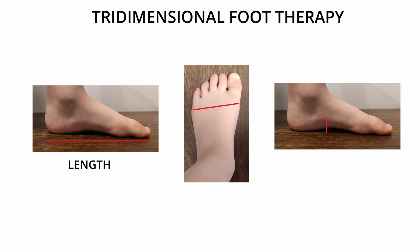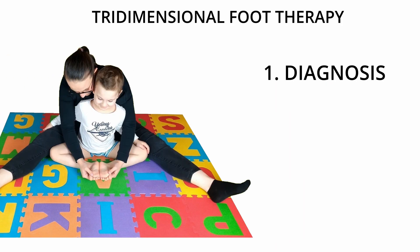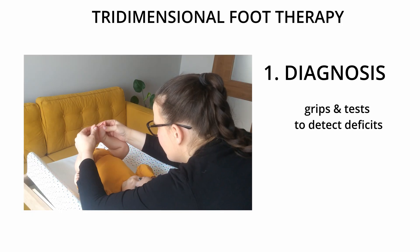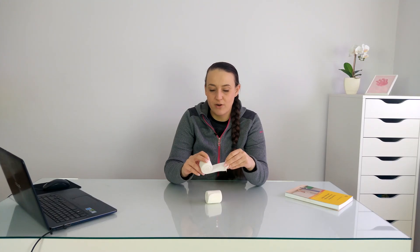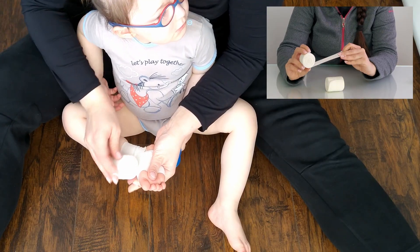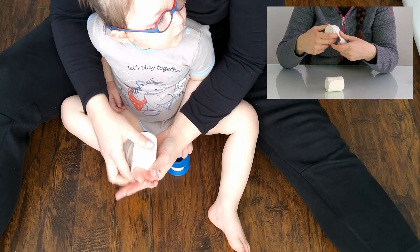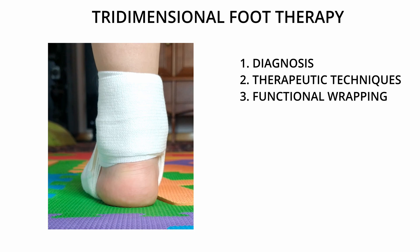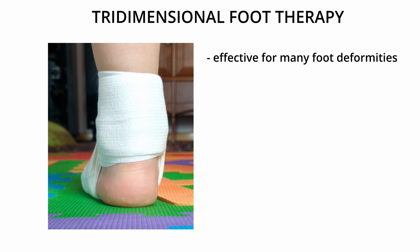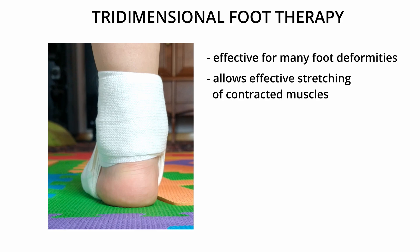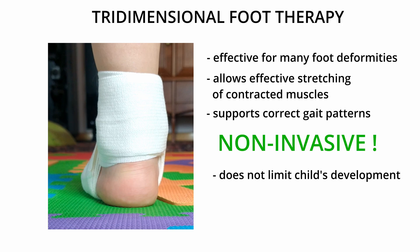So what is the three-dimensional method? As the name suggests, we focus on all three dimensions of the foot: its length, width, and height. First of all, this method gives therapists very good diagnostic tools — appropriate grips and tests on the basis of which we are able to assess the correct development of the lower limb and detect possible deficits. When we find deficits, we use therapeutic techniques, mainly stretchings. The last element of the therapy is functional taping or wrapping: with a special elastic bandage we tape in a certain way and in a certain direction. The physical therapist shows parents how to do these exercises and taping, and then parents continue doing it at home, because the therapy has to be done every day. This therapy is effective for many foot deformities — not all, as some require surgery — but it allows for effective stretching of contracted muscles, normalizing tension, supports correct gait patterns, and above all is non-invasive and does not limit the child's development in any way.